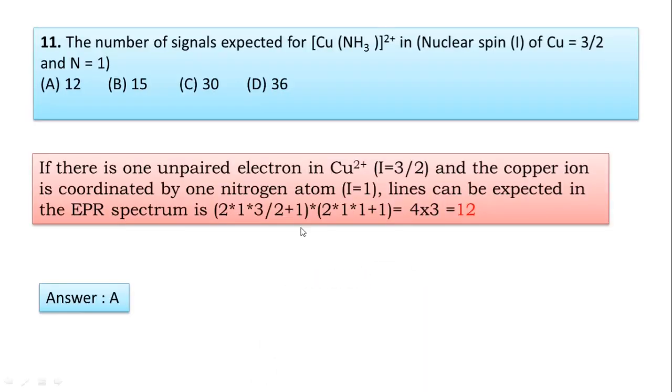Question number 11: The number of signals expected for Cu(NH3)₂²⁺ in nuclear spin of copper is 3/2 and N equal to 1. If there is one unpaired electron in Cu²⁺ (I=3/2) and the copper ion is coordinated by one nitrogen atom (I=1),